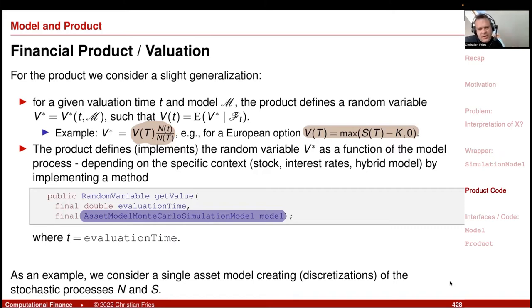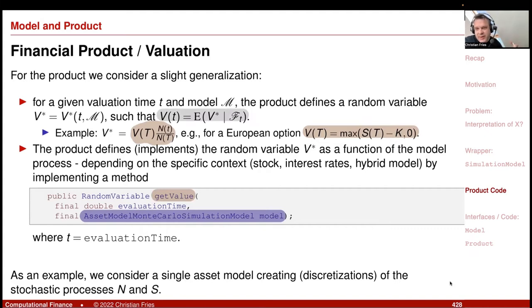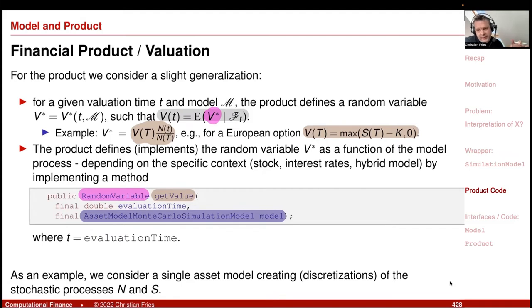For product valuation, I do a small generalization: I do not return the value as the expectation directly. Instead I return the random variable V* that sits inside. You still need to take the expectation, but it's nice to still have the full random variable — for example, for control variables, or to calculate standard error and covariances.